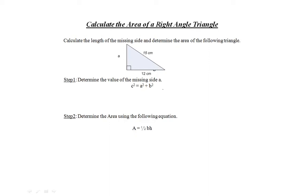Determine the value of the missing side A using the Pythagorean theorem equation. C squared equals A squared plus B squared.